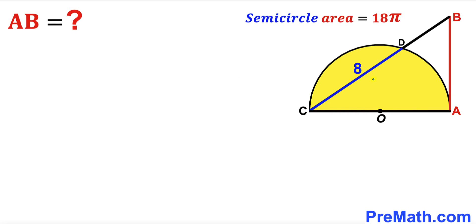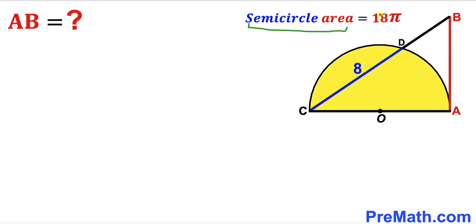Welcome to pre-math. In this video we have got a semicircle with center O and triangle ABC put together, such that segment CD is 8 units. The area of this semicircle has been given as 18π square units, and our task is to find the value of side AB.